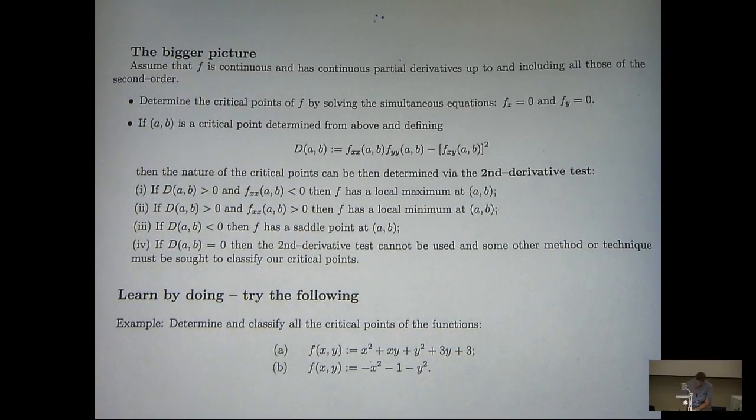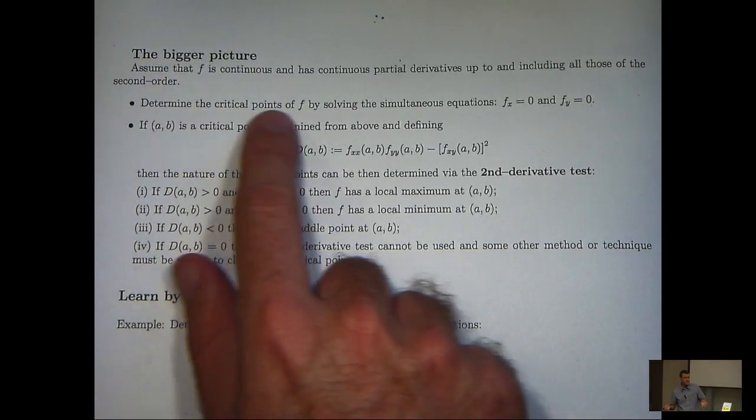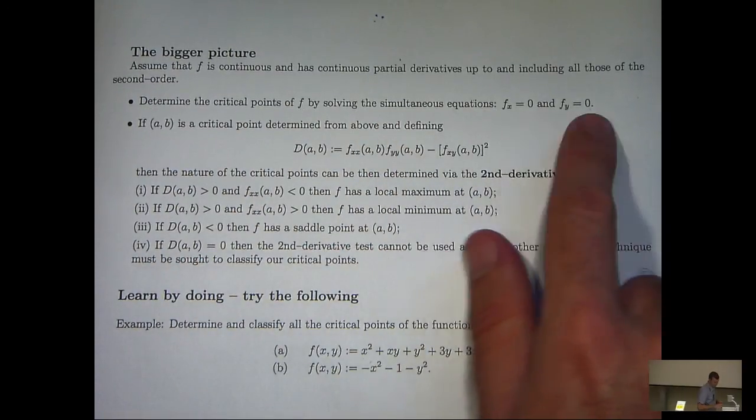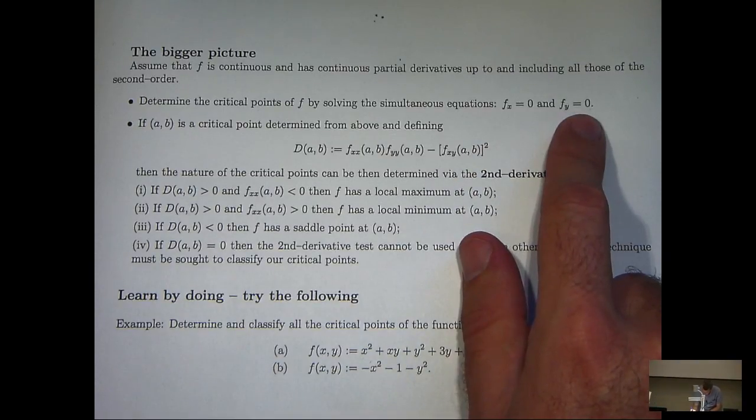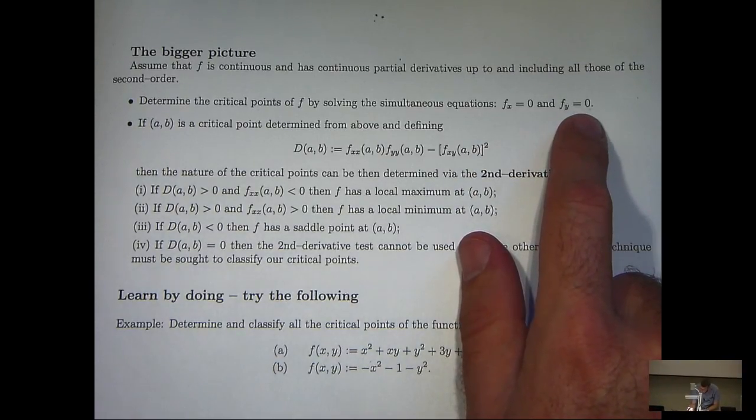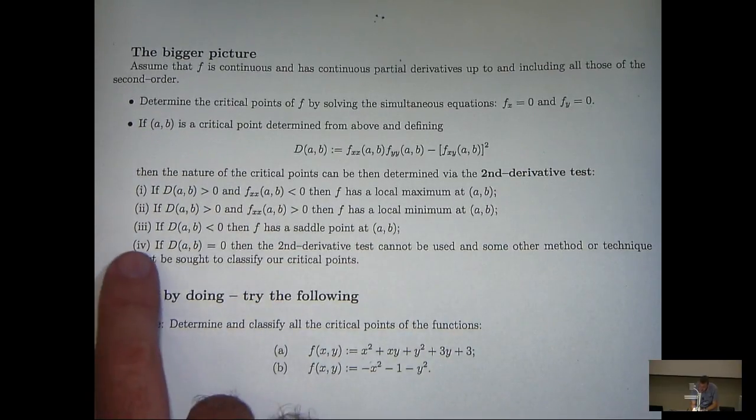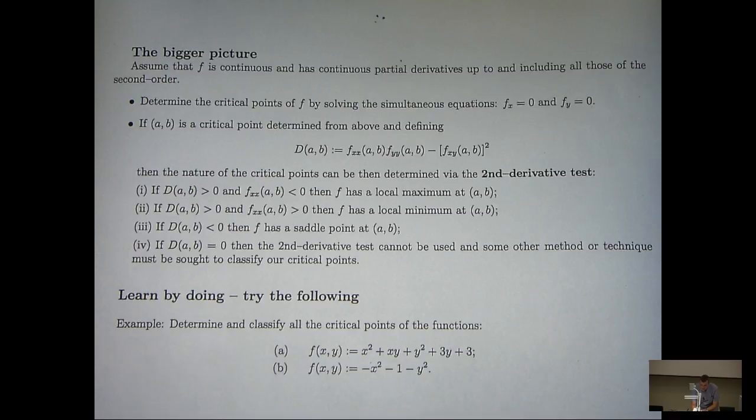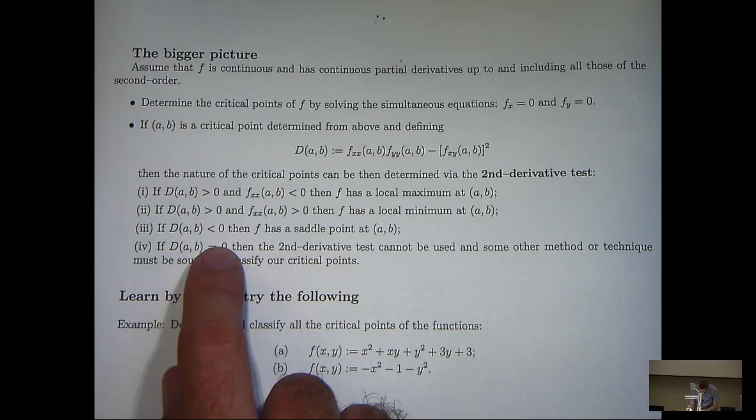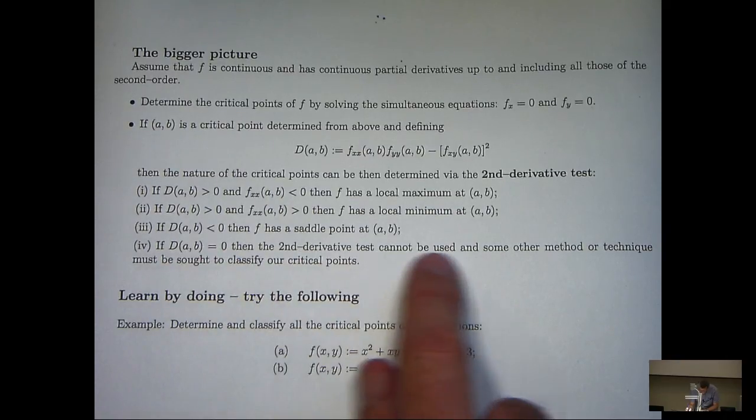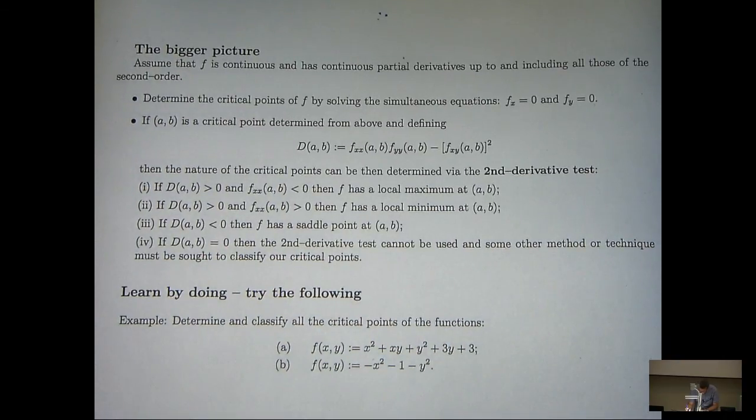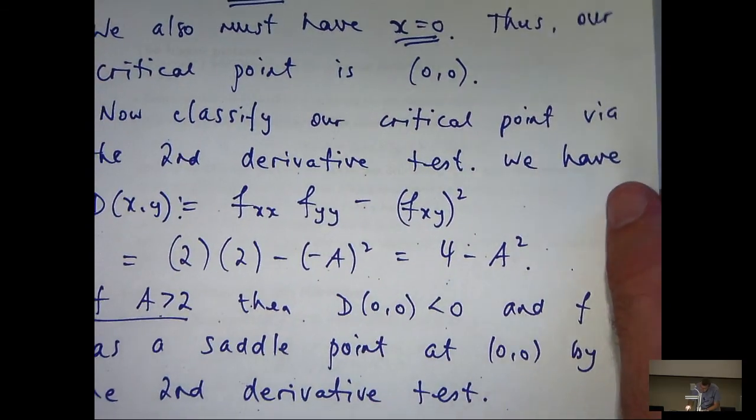Now, this assumption was automatically satisfied in our example because f was a polynomial. You can determine the critical points of f by solving these simultaneous equations. Once you've found the critical points, you can test it using the so-called second derivative test. Now, an important part of the understanding of this test is knowing its limitations. If this D is 0, then the second derivative test cannot be used. So, let me just relate that back to our example.